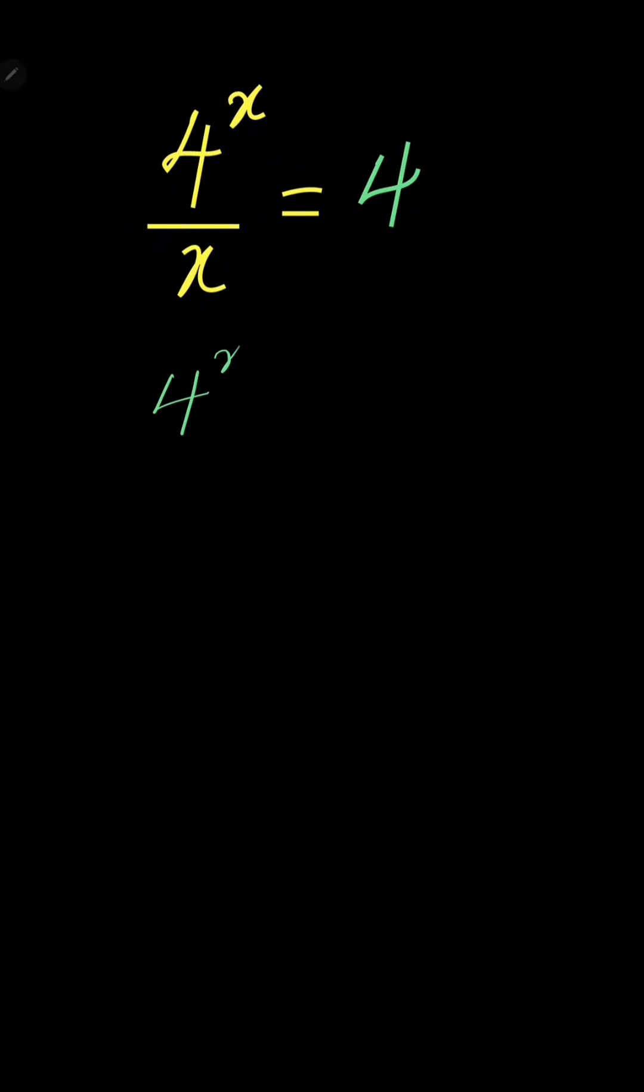So this is 4 raised to the power of x all over x is equal to 4. You can cross multiply. Then you have 4^x is equal to 4x.